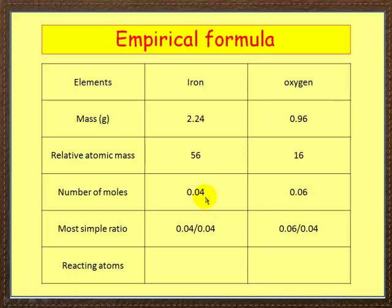So divide both sides by the smallest. So 0.04 over 0.04, and 0.06 over 0.04. Now you work these out, you find you get a ratio of 1 to 1.5.